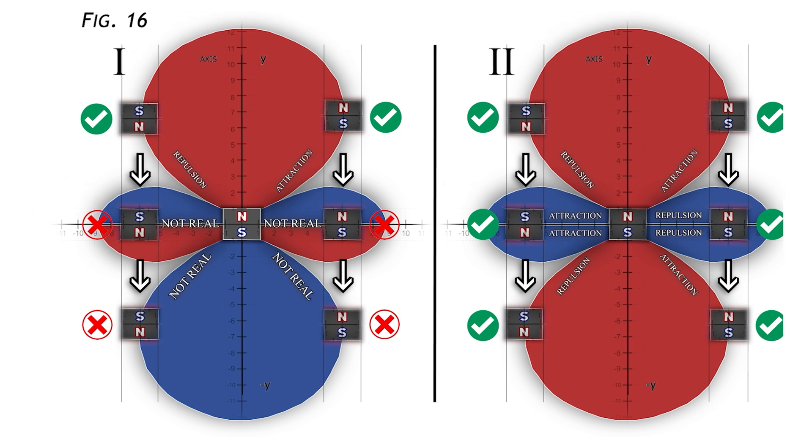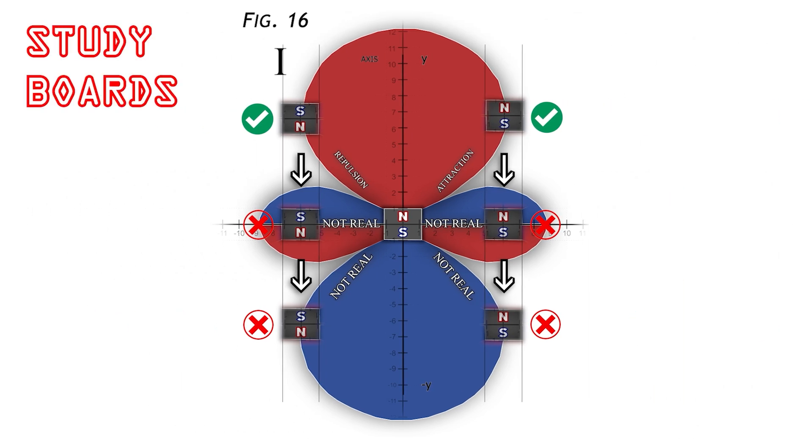Now, let's test it step by step. On the study boards on the left, if I bring in another magnet with its south pole facing up, the very first interaction is repulsion between north and north. We assign it the red color. So far, so good.